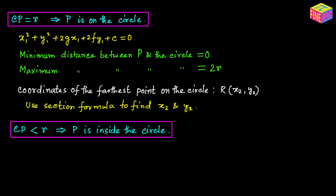When P is inside the circle, the necessary condition is that CP < R — only then can P be inside the circle. Using the general equation of the circle and performing the same derivation with a less-than sign, we get: x₁² + y₁² + 2gx₁ + 2fy₁ + c < 0.